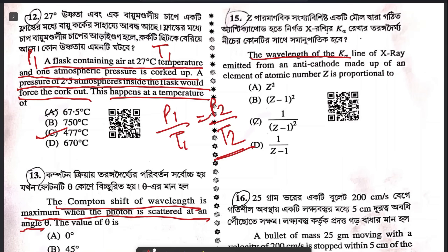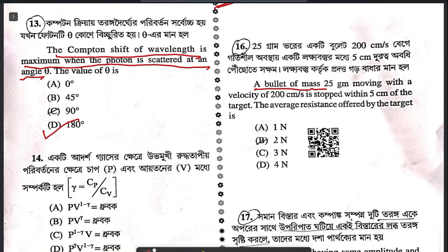Question 15: the wavelength of K-alpha line of X-rays emitted from an anti-cathode made of an element of atomic number Z is proportional to C. Question 16: a bullet of mass 25 grams moving with a velocity of 200 cm/s is stopped within 5 cm of a target. The average resistance offered by the target is B.